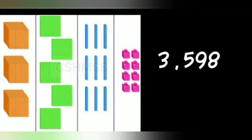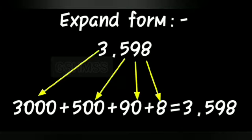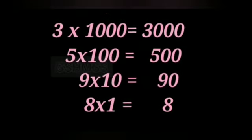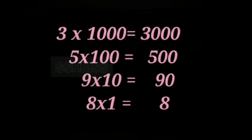In this picture there are three thousand cubes, five hundred flats, nine ten towers, and eight ones blocks. So I write three thousand five hundred and ninety-eight. This is the expanded form: three thousand five hundred and ninety-eight. Three in the thousands place is three thousand, five in the hundreds place is five hundred, nine in the tens place is ninety, eight in the ones place is eight.